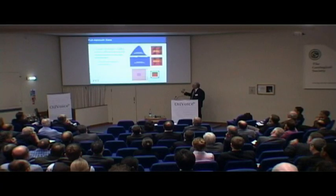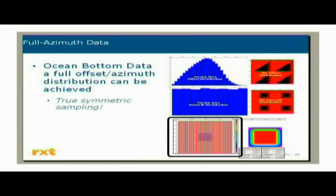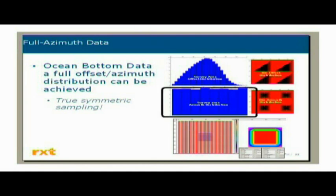But it comes at a price. This is the receiver array, this is the receiver grid, and this is 400-fold symmetrically sampled data in 12.5 meter by 12.5 meter bins. But you do get a complete azimuth distribution and a uniform azimuth distribution.